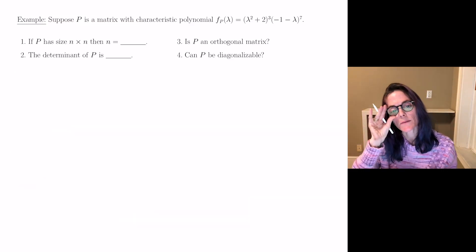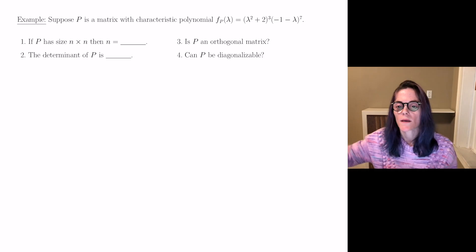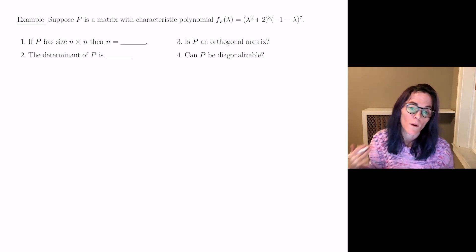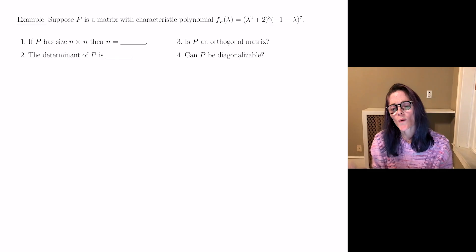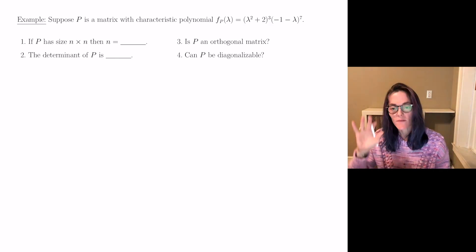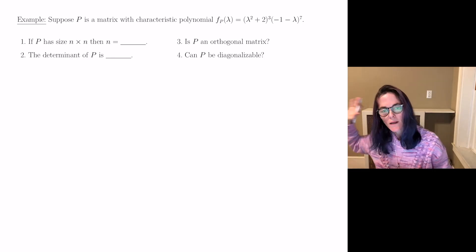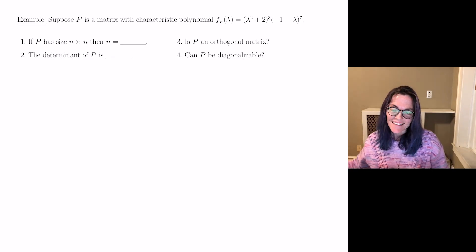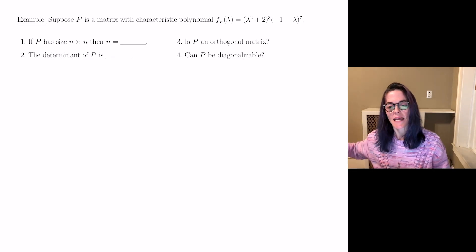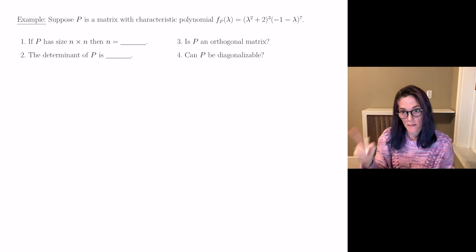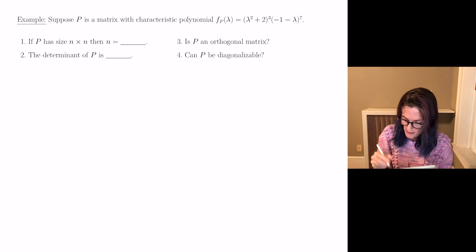Last question. P is a matrix with this characteristic polynomial. If P is n by n, what is n? We're asking for the degree of the polynomial. We have lambda squared plus 2, cubed — that's 6 degrees — plus minus 1 minus lambda to the 7th. So my answer is 6 plus 7, which is 13.